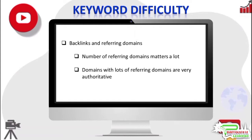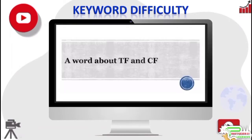Another very important number to look at is the number of keywords a site ranks for. The more keywords a site ranks for in Google, the more authoritative it is. Blue Penguin Coffee ranks for 1,100 keywords, which is actually not bad, while cnn.com ranks for a whopping 30 million keywords.